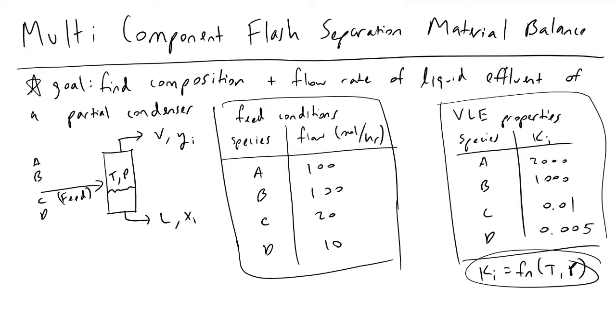The first equation is the definition of the vapor-liquid equilibrium constant k_i, where i is any species we're working with: A, B, C, or D. It's defined as the molar ratio of species i in the vapor phase, y_i, divided by the molar ratio in the liquid phase, x_i. This gives us equations we will use.